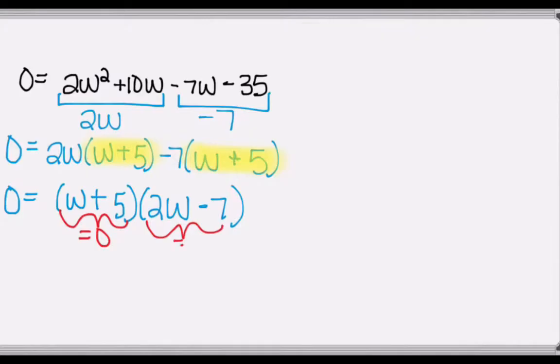So to solve, we set each factor equal to 0. When we set W plus 5 equal to 0, we subtract both sides by 5 and end up with W is equal to negative 5. Since W is the width of a rectangle, we throw this answer out because we can't have a negative length or width.